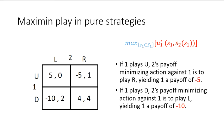Now we'll substitute that solution in. You'll notice this looks just like a best response function for player two, except it's not. This is a mapping from player one's strategy space into player two's strategy space, whereby player two is minimizing player one's utility. So U* here is the minimum utility that player one achieves when player two is optimally minimizing.